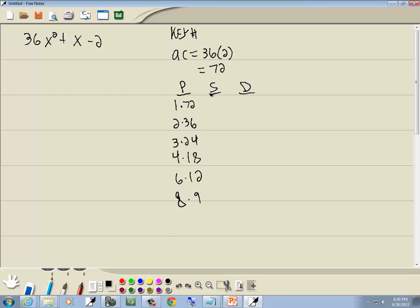In the sum column, we want to add these numbers together. 1 plus 72 is 73, 2 plus 36 is 38, 3 plus 24 is 27, 4 plus 18 is 22, 6 plus 12 is 18, 8 plus 9 is 17.